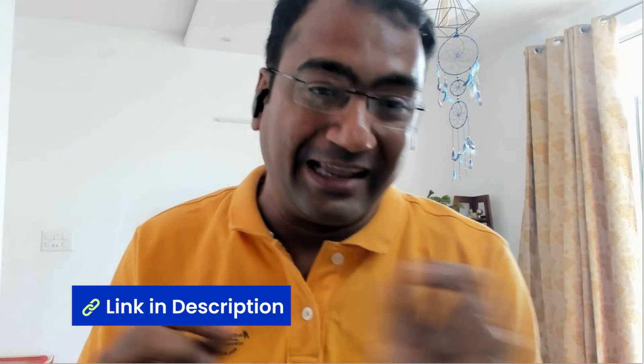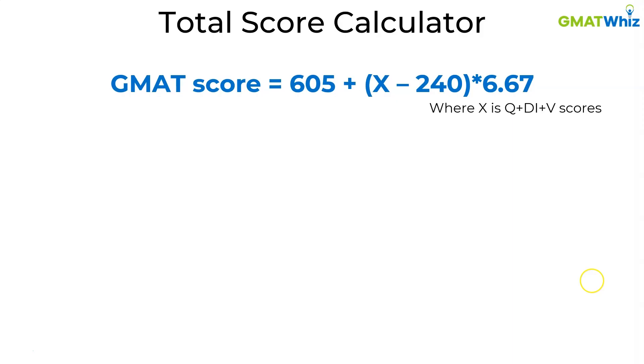We will give you a link in the description to get this mapping chart if you want to. Now, you might be thinking: I understand the individual scores, but how do I get a total score out of 805? What I've done is I've created a simple formula — you just plug in numbers and it tells you the overall score. This formula is something we've derived after looking at thousands of GMAT Focus scores. You plug in x as the total of your quant, DI, and verbal scores, and the outcome will be the GMAT score.